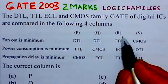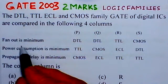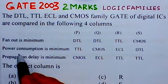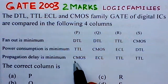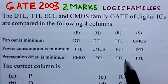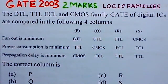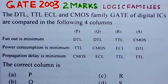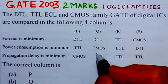These columns are P, Q, R, and S. The three parameters being compared are: fan out is minimum, power consumption is minimum, and propagation delay is minimum. We have to find out which column is the best fit for the logic families given in that column.